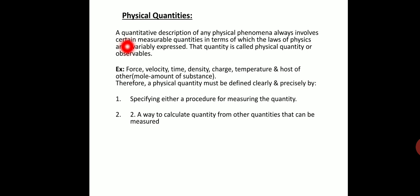A quantitative description of any physical phenomenon always involves certain measurable quantities in terms of which the laws of physics are expressed. There is a quantitative description and a qualitative description. Qualitative description shows characteristics which we cannot measure, but we need a measurable quantity to define a physical phenomenon. As said, 60 kilometers per hour means the body is moving at an amount of 60 kilometers per hour.